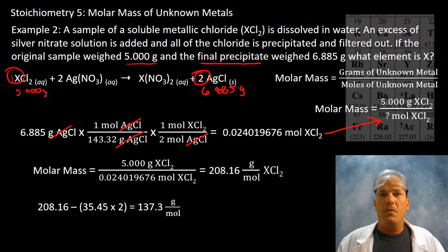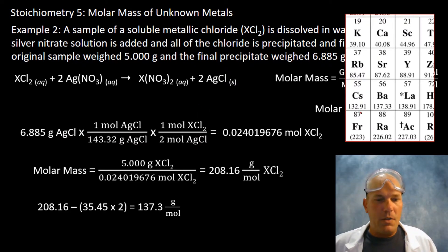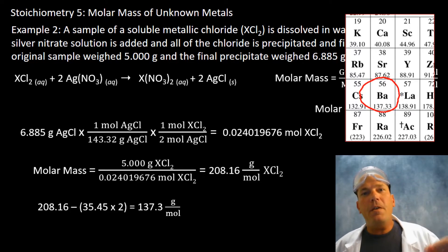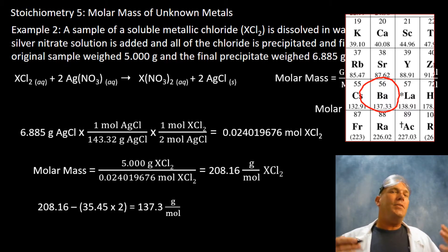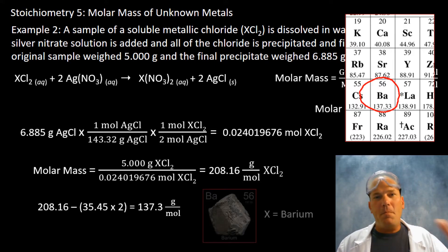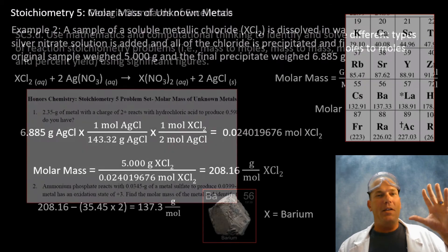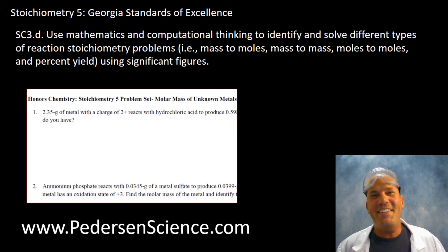The problem asks for element X, so one more step: subtract out the two chlorines — 35.45 × 2 — from 208.16. That gives 137.3 grams per mole. Looking at the periodic table, 137.3 is barium! Further confirmation: barium is in Group 2, and Group 2 metals have a +2 charge, consistent with XCl₂. The unknown metal is barium. Now you see why I love these problems — I'll see you in class.